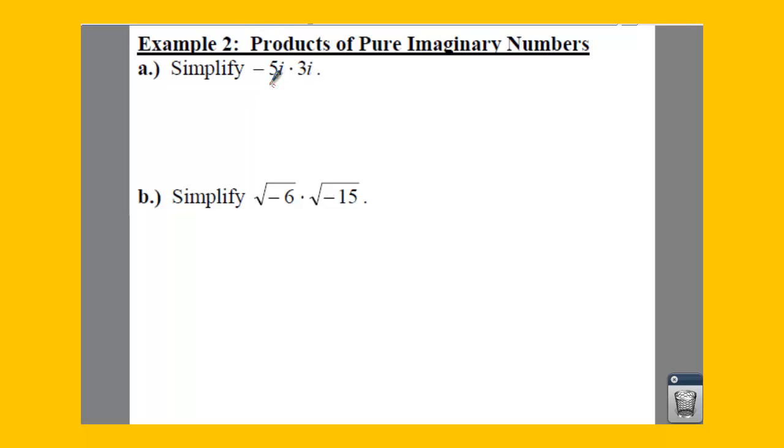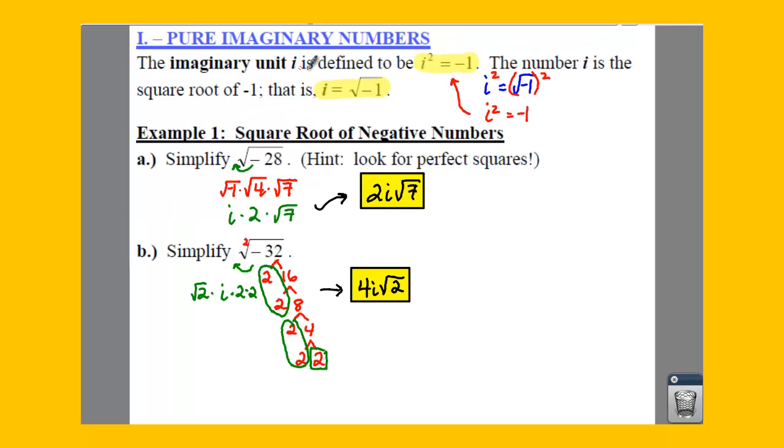If you take just your numbers and multiply those together, you get negative 15. And if you take i times i, that's going to give you i squared. Well, if we remember from the previous example, i squared is equal to negative 1.